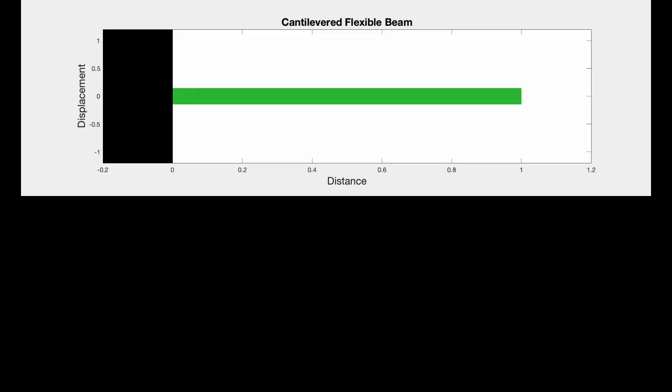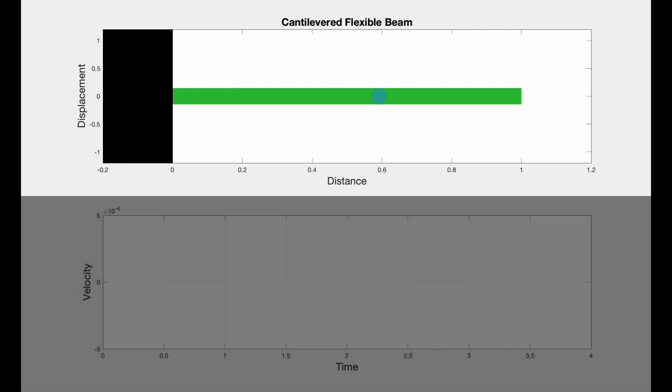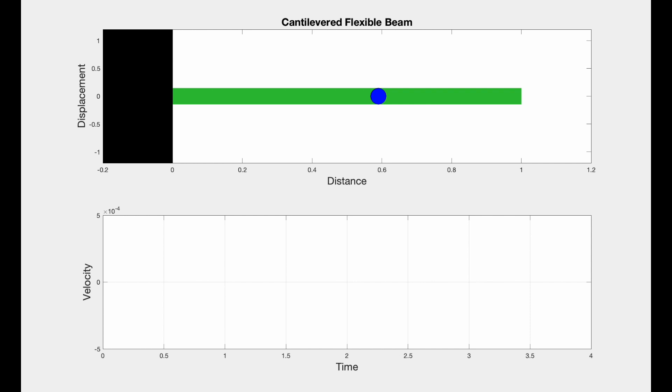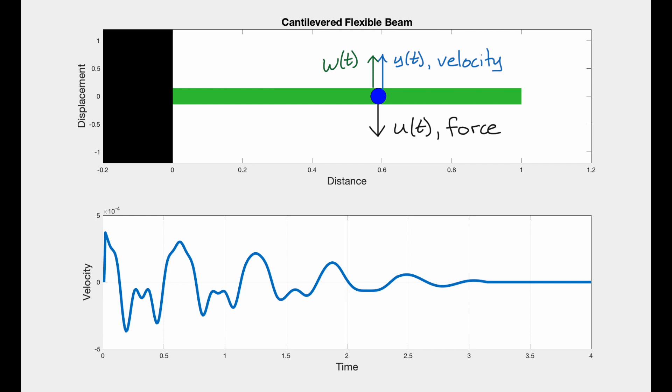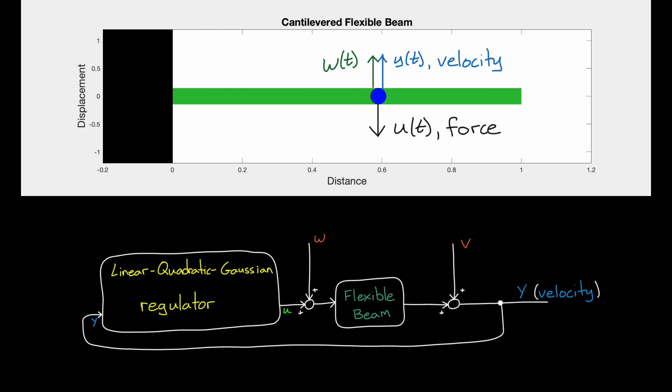To begin, I want to set up a simple example that we're going to use throughout this video: controlling a cantilevered flexible beam. Here, disturbance forces enter this system near the middle of the beam and set the beam in motion. We can measure the velocity of the beam at that point with a velocity sensor and then control the motion of the beam with a force actuator.